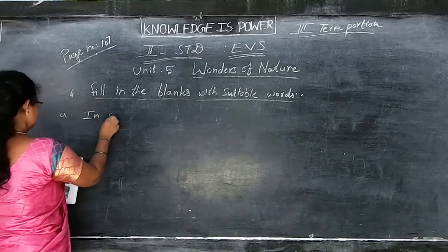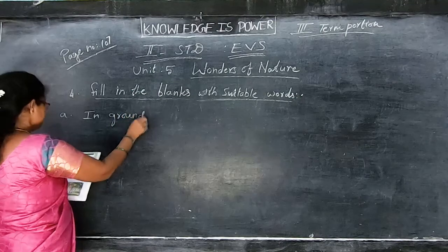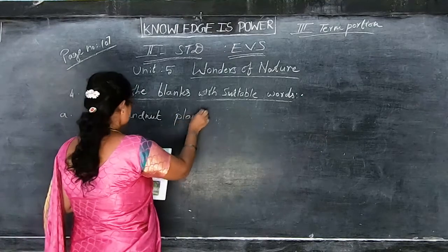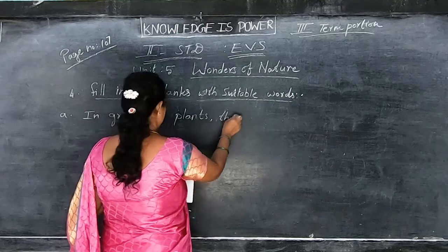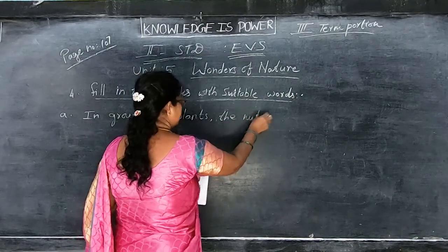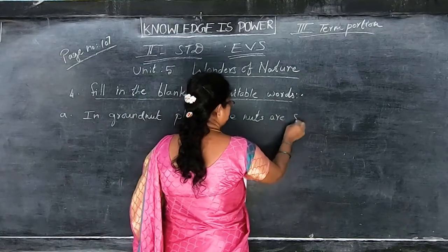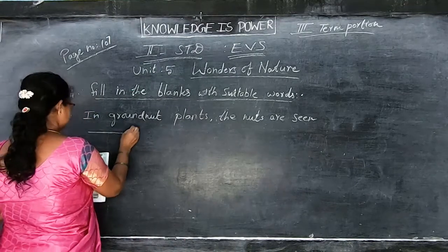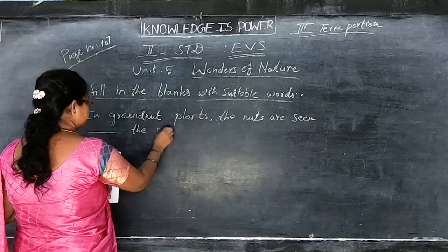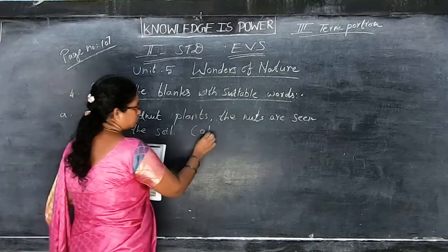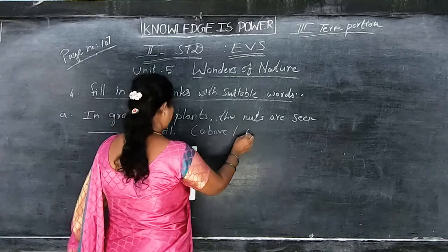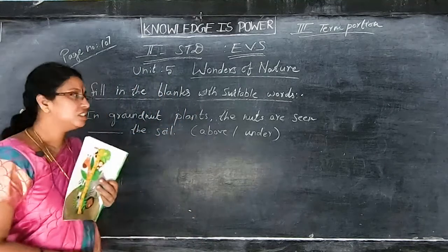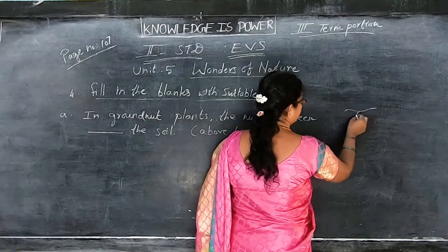In a groundnut plant, the nuts are found dash the soil. We have given the choices: above and below. The answer is U-N-D-E-R — under. Groundnut will grow down only, under the soil.